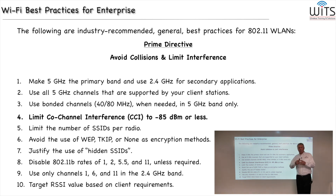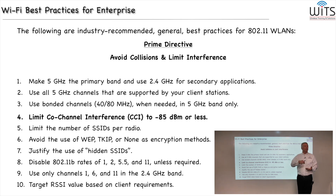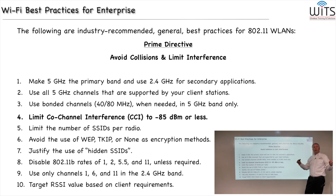The more devices you have wanting to transmit on channel 6, the more they are politely backing off and saying, 'I'll wait my turn.' The result is slower performance — but not because of collisions, because of too many devices on the network. That's why we need to use as many separate channels as possible to give everybody the least amount of co-channel interference possible.